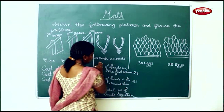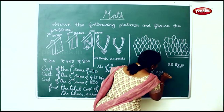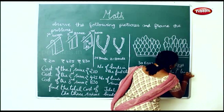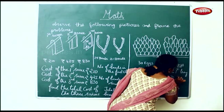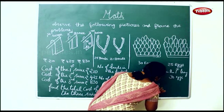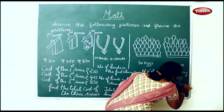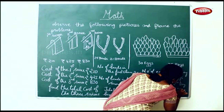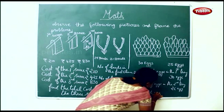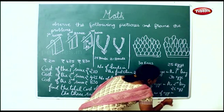The next one: write the number of eggs in the first tray — 30 eggs. Number of eggs in the second tray — 25 eggs. Now we will frame a problem for this: find the total number of eggs in both the trays.